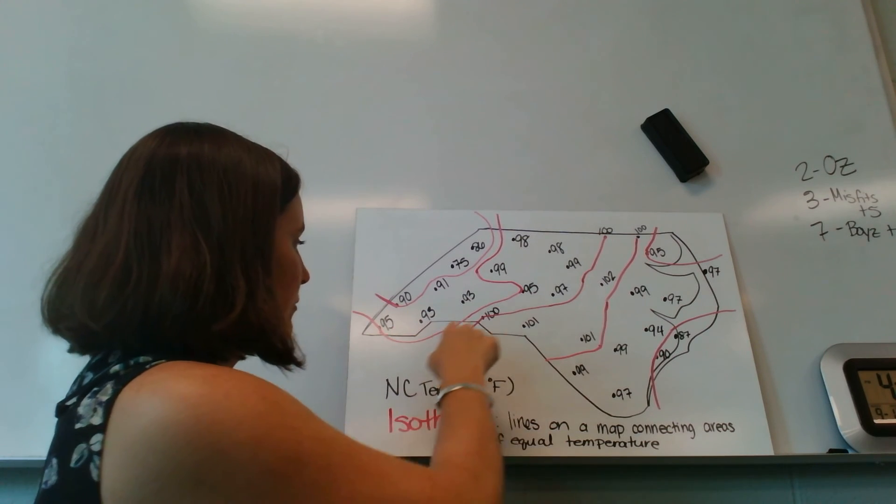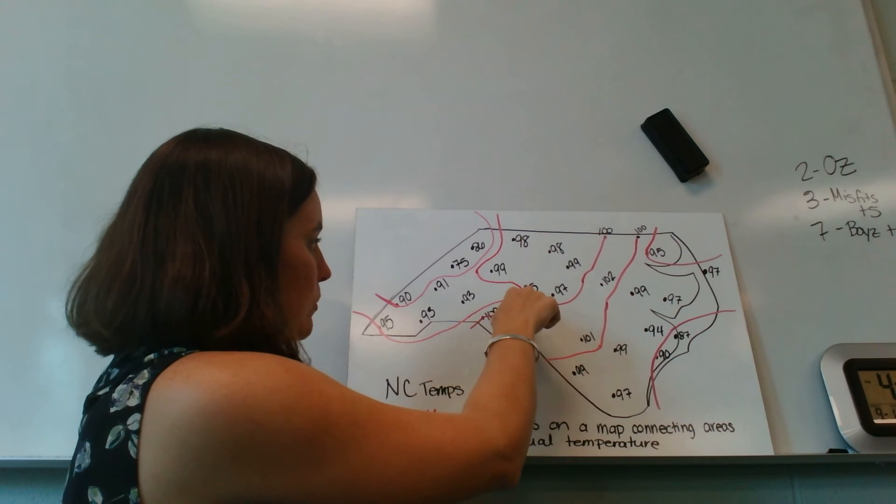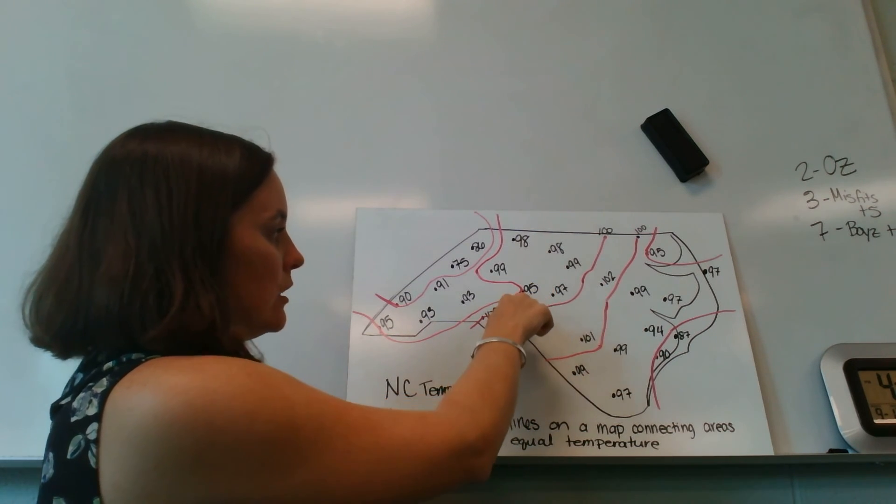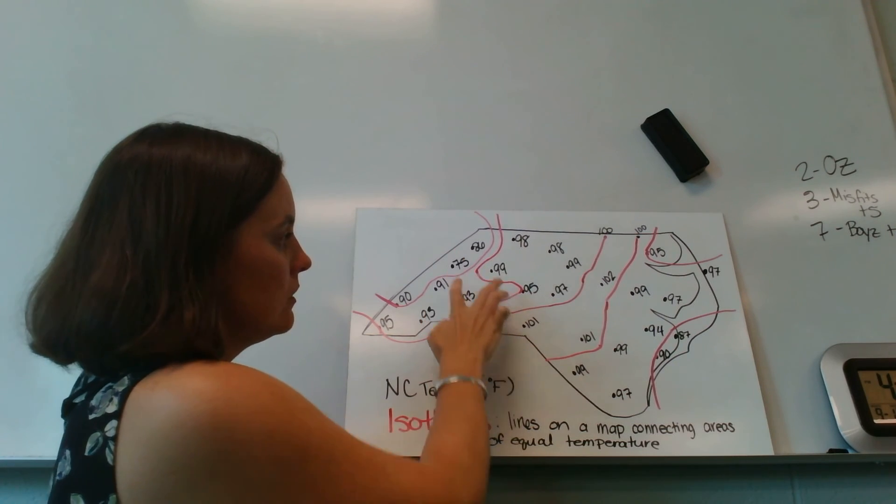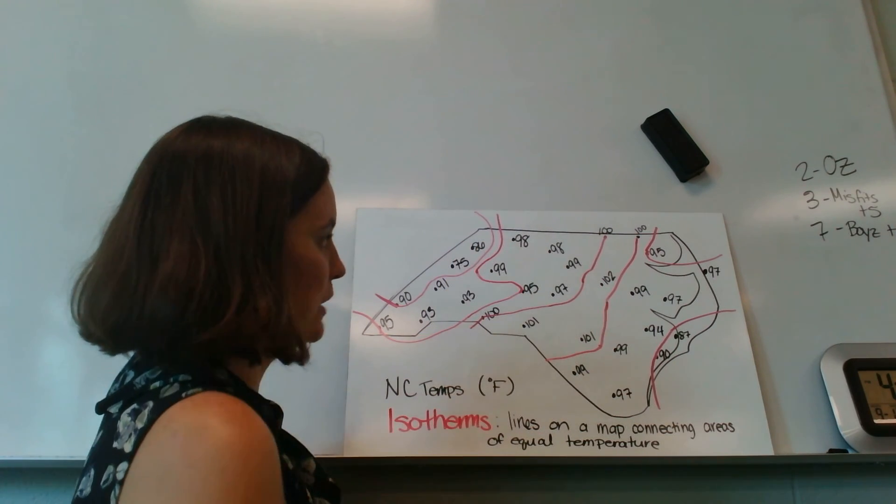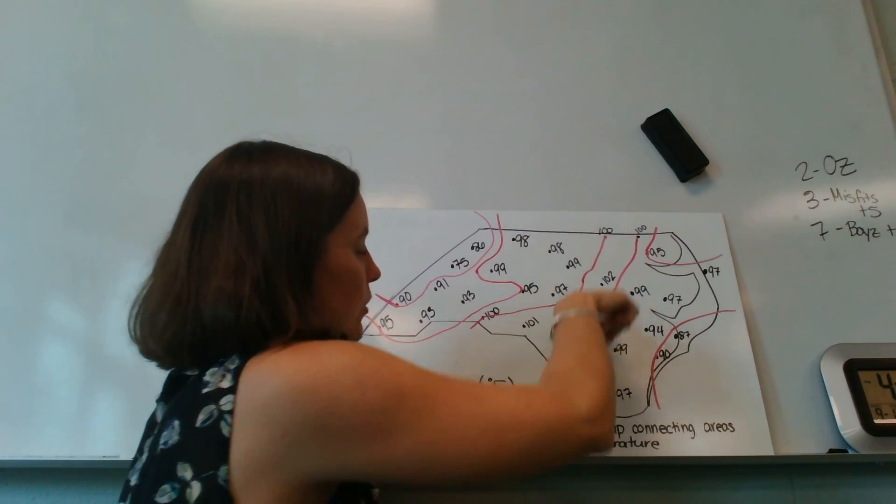And I have my 95 degree Fahrenheit isotherm. Even though I only had two points of 95, I still know where 95 is on a number line. I know that it's in between sets of numbers. And so I can make my isotherm fit there. And then my 100 degree isotherm there and another one here.